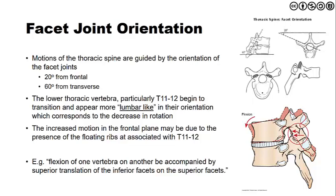The reason we want to talk about facet orientation now with regards to kinematics is that it is the orientation of these facets that guides the kinematics. For example, if we flex one vertebra on another, that is accompanied by the superior translation of the inferior facets of the vertebra above on the superior facets of the vertebra below, such that the inferior facets above glide superior-anterior on the more stationary facets below, which adopt more of a posterior-inferior orientation.